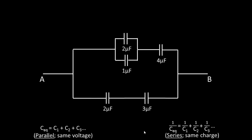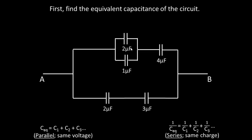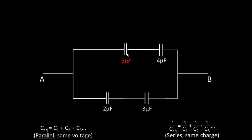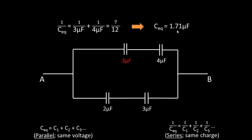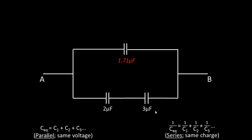The first thing to do is find the equivalent capacitance of the whole circuit. The 2 microfarad and 1 microfarad capacitors are in parallel, so 2 plus 1 equals 3 microfarads. This 3 microfarad equivalent is in series with the 4 microfarad capacitor, so we add inversely: 1 over 3 plus 1 over 4 equals 7 over 12. Taking the inverse gives an equivalent capacitance of 1.71 microfarads for the top branch.